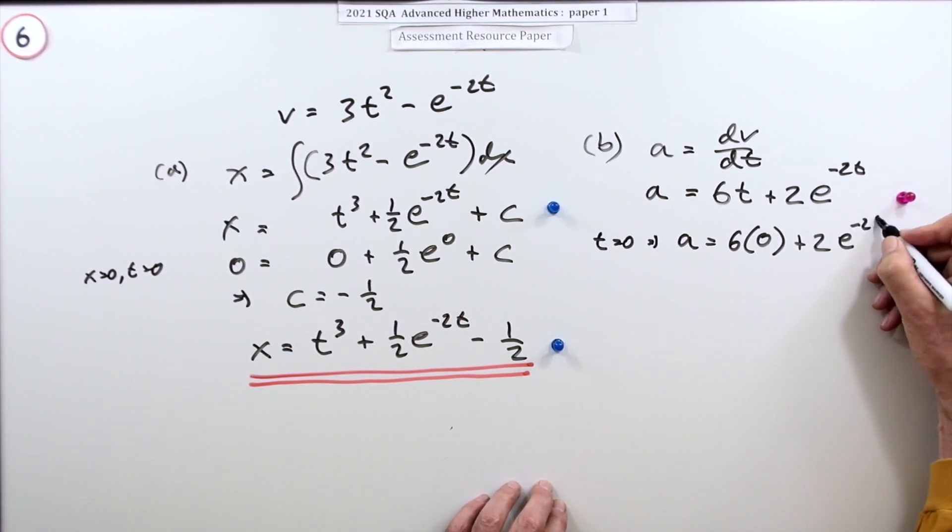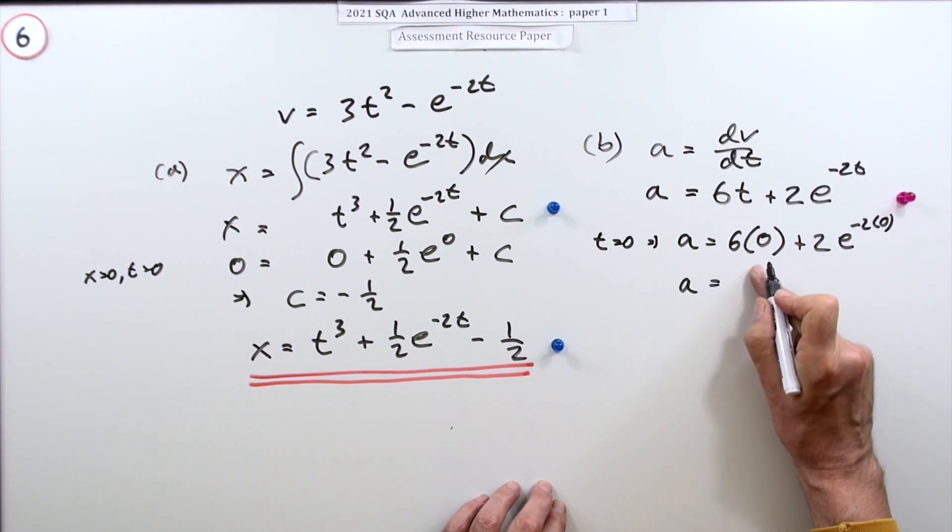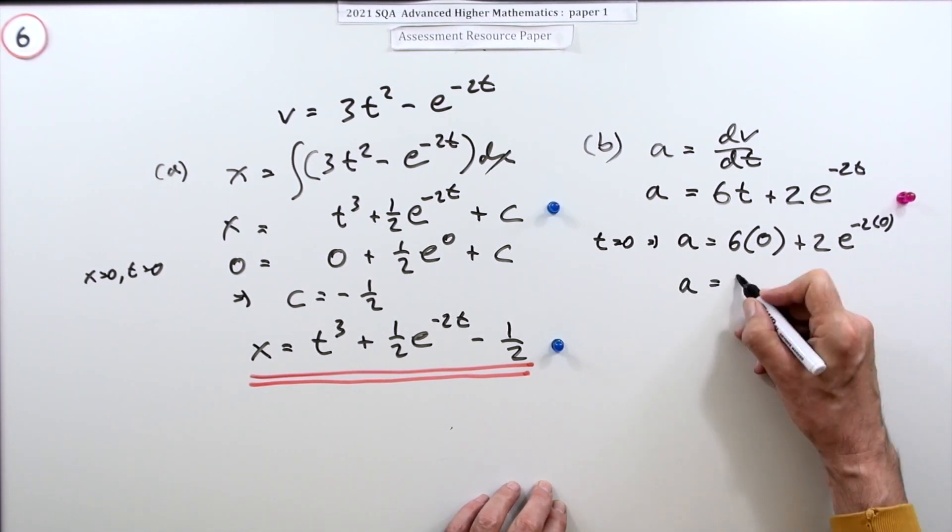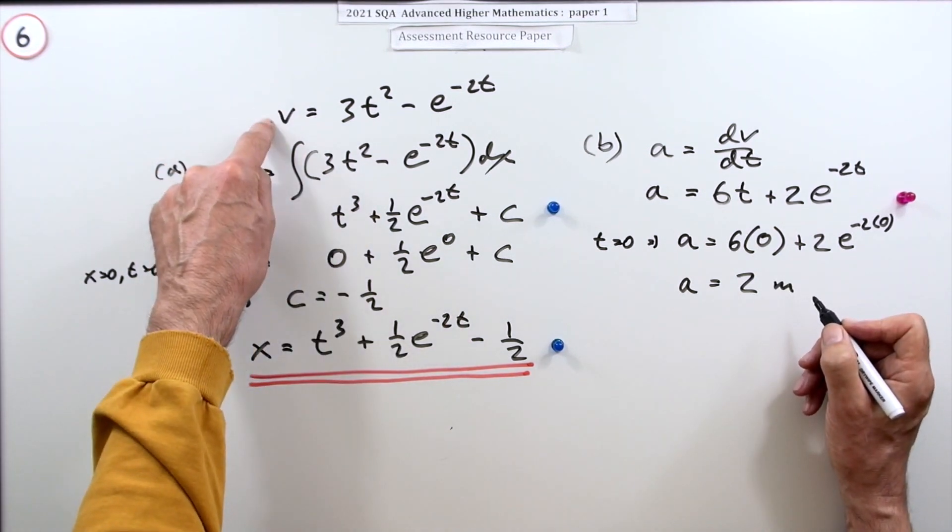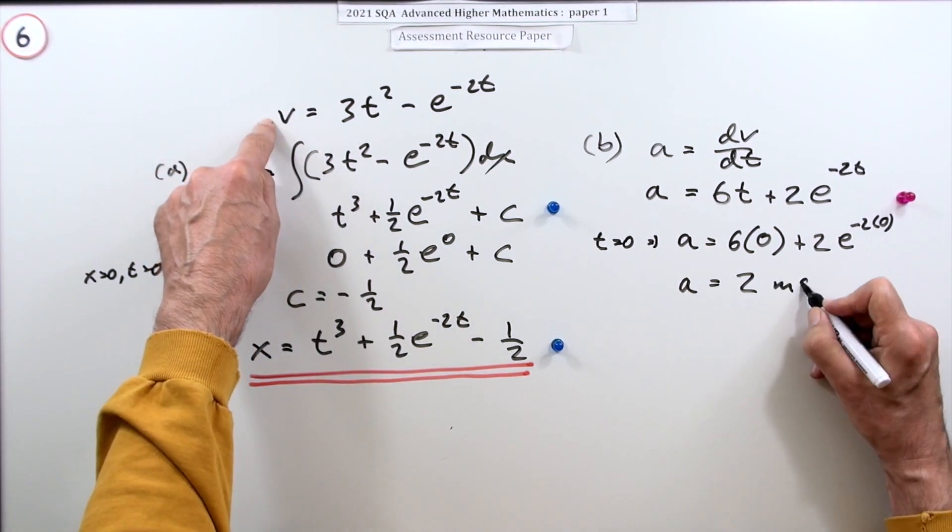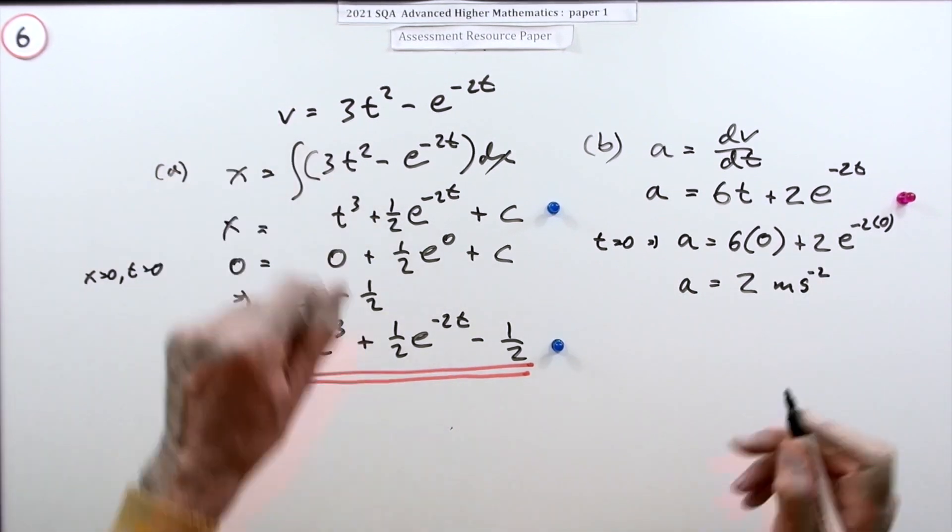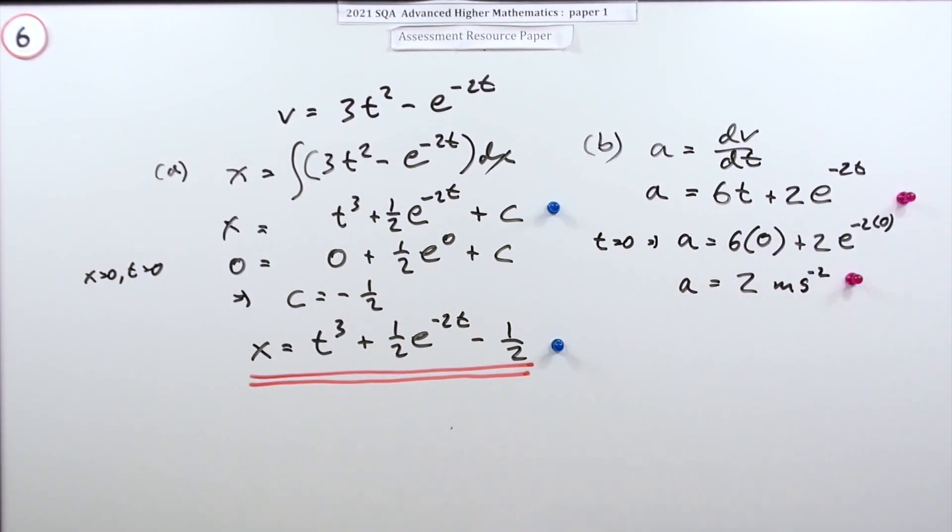I've done it now, times zero. Well that's just zero, that's just a one, so it's two. But it's meters - I gave you units at the beginning. It said the velocity was meters per second, so this is meters per second squared for that mark.